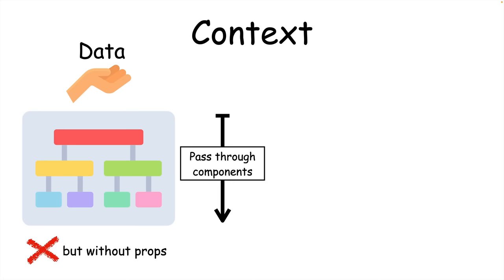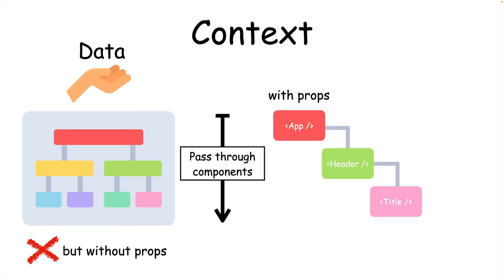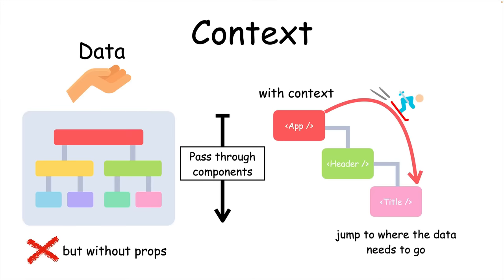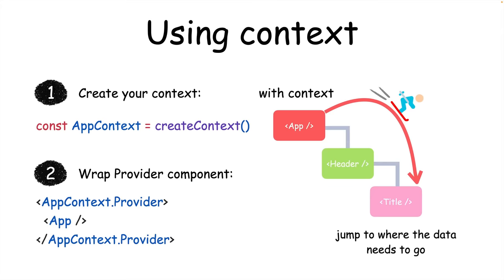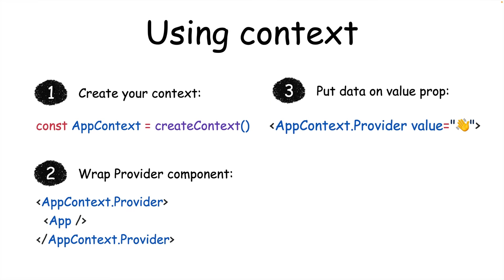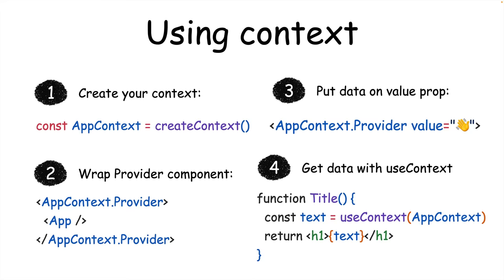Context is a powerful way to pass prop data through your app's components. Most React apps have tons of nested components, and getting data down multiple levels involves passing the same props through components that don't actually need it. Context lets us jump through the component tree and use data at any level without threading props. To use context, you first create context in a parent component, then wrap your parent component in a context provider, put the data you want to pass down on the provider, and finally access that data in any child component with the useContext hook.